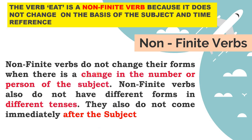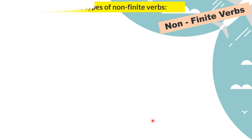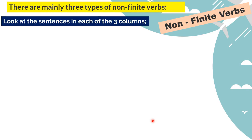Non-finite verbs do not change their forms when there is a change in the number or person of the subject, do not change according to tenses, and do not come immediately after the subject. Here the verb 'eat' is non-finite because it does not change with reference to time and the subject. There are three types of non-finite verbs.